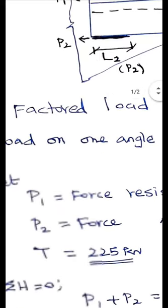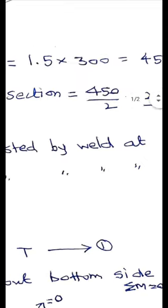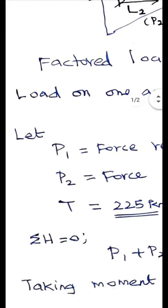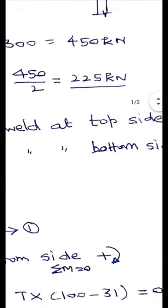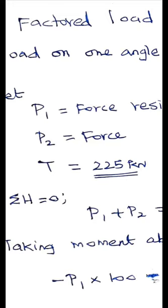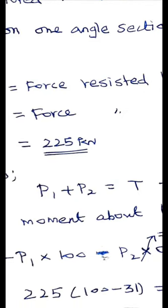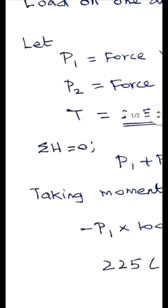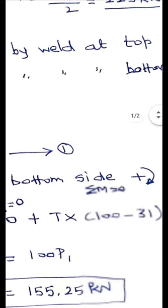P1 equals force resisted by weld at top side, P2 equals force resisted by weld at bottom side. The total tensile force acting on one angle is 225 kilo Newton. Considering horizontal equilibrium, T acts from left to right, and P1 and P2 act in the opposite direction. Therefore P1 plus P2 equals T.